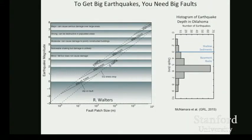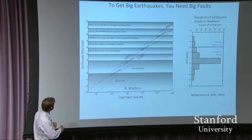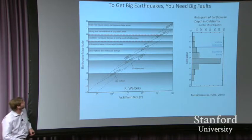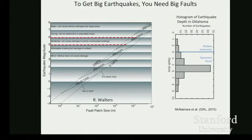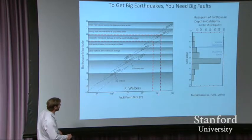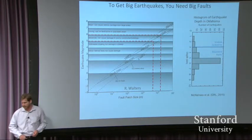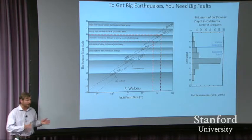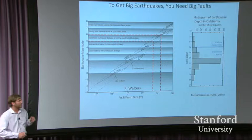We need to worry about the hazard from triggering earthquakes. To get big earthquakes, you need big faults. A typical scaling shows that to produce a magnitude 5 or magnitude 6 earthquake, you need a fault patch at least several to 20 or 30 kilometers in length. To get earthquakes that big, you need faults that big, and so they have to extend into the basement.